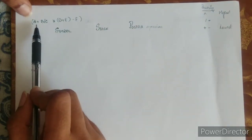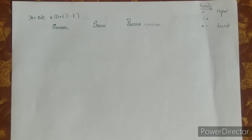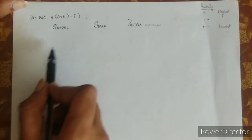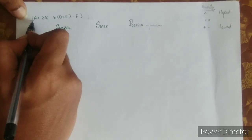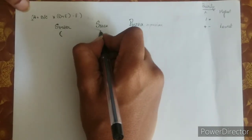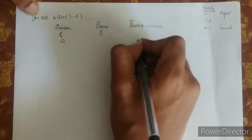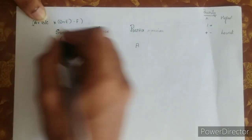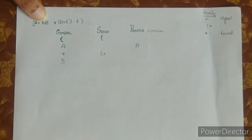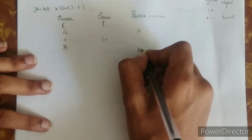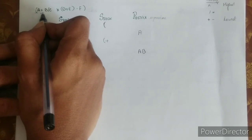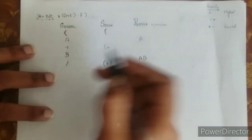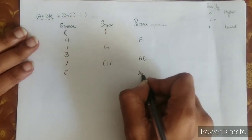Now let's see an example. The priorities are: highest is exponential, then multiplication and division, and lowest is addition and subtraction. Consider this infix expression: a plus b divided by c multiplied by d plus e minus f, with parentheses. We have three columns: symbol, stack, and postfix expression. The first symbol is the left parenthesis — push it into the stack. Next is a, which is an operand — add it to the postfix expression. Next is a plus operator — push it into the stack. Next is b, an operand — add it to the postfix expression. Then comes the division operator — push it into the stack. Next is c, an operand — add it: postfix is now a, b, c.